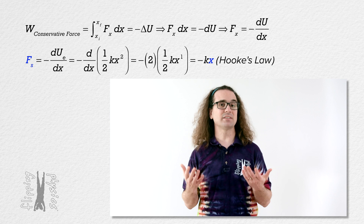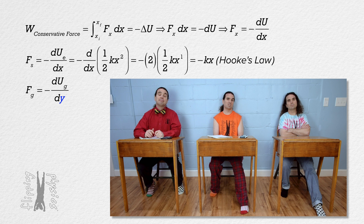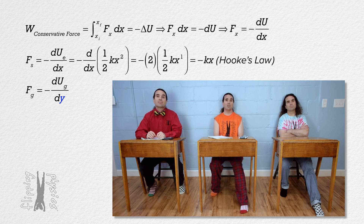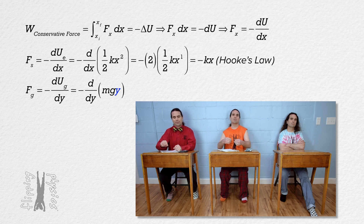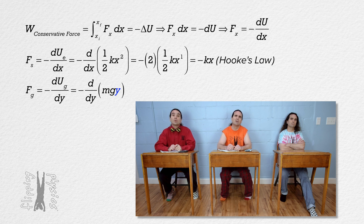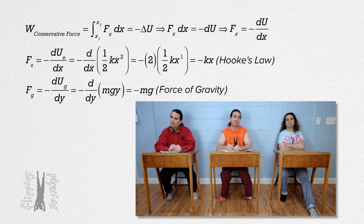Bobby, please do the same thing with gravitational potential energy. The force of gravity equals the negative of the derivative with respect to y position — actually, it should be y position because the force of gravity is in the y direction — of gravitational potential energy. The equation for gravitational potential energy is mass times acceleration due to gravity times height y above the zero line. The derivative of that equals negative mass times acceleration due to gravity. That means the equation relating conservative force to change in potential energy is valid, and the force of gravity is negative because the force of gravity is down.